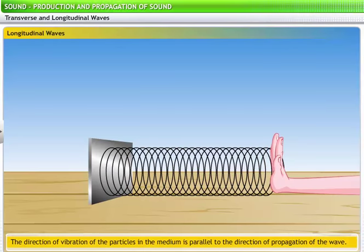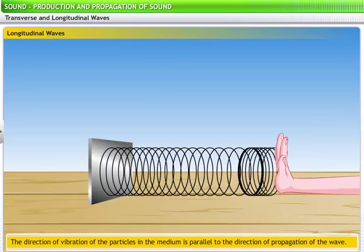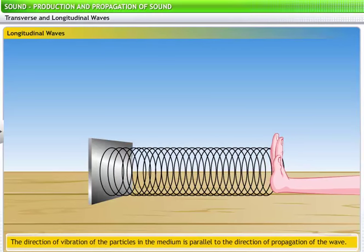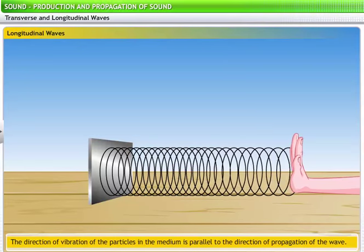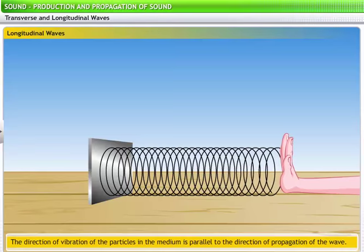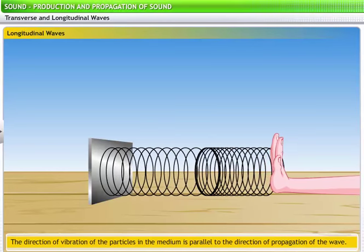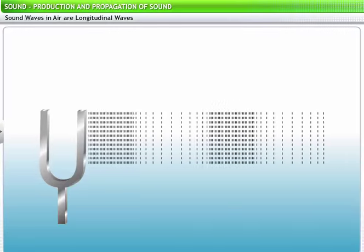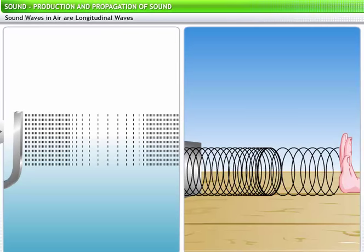In longitudinal waves, the direction of vibration of the particles in the medium is parallel to the direction of propagation of the wave. The wave pattern set in a slinky is an example of a longitudinal wave. Let's recall the tuning fork experiment. In sound waves produced by a tuning fork, particles of the medium vibrate in a direction parallel to the direction of wave propagation. This produces compressions and rarefactions in the wave similar to that in the pattern showed by a slinky. Thus, we can see that sound waves in air are longitudinal waves.